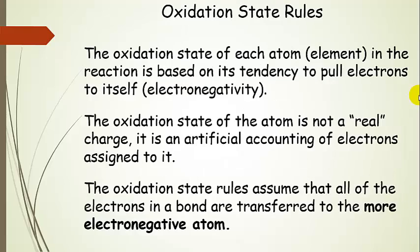The oxidation state rules are based on the idea of electronegativity — the tendency of an atom to pull electrons to itself. Oxygen is a very electronegative atom, and fluorine is a very electronegative element, so we have certain rules to determine which one gets the electrons from another. The oxidation state of an atom in the reaction is not a real charge. It looks like a charge because we put it in the top corner, but it's really just an artificial accounting of electrons assigned to it. We're assuming that the more electronegative element takes all the electrons in that bond.